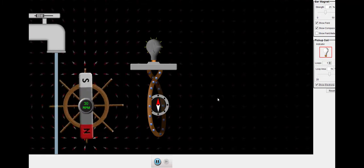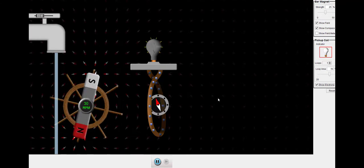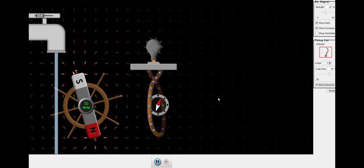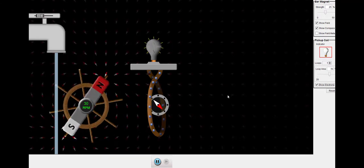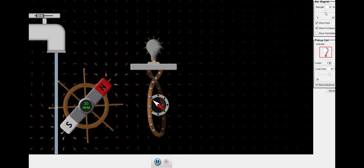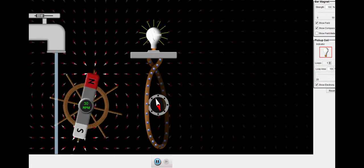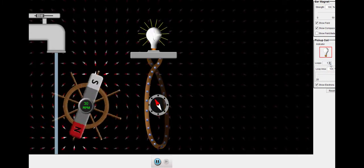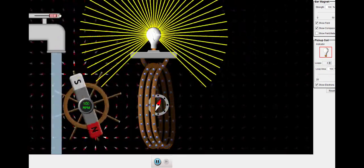What factors affect how brightly the lamp glows and the size of the maximum current? There are four factors. Pause the video and see if you can figure out what they are. The four factors are the magnetic field strength, the area of the loop, the number of turns of wire in the coil, and the speed of frequency at which the magnet rotates.